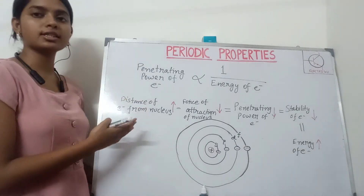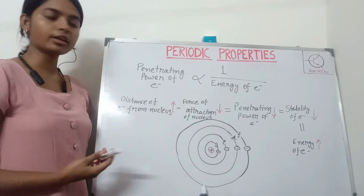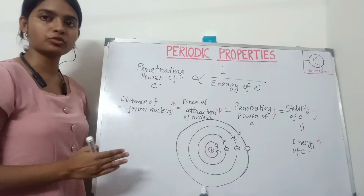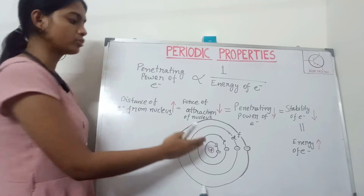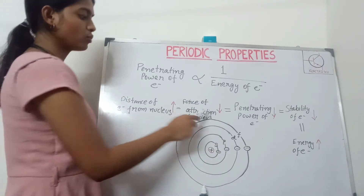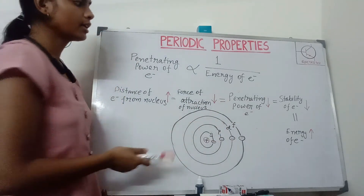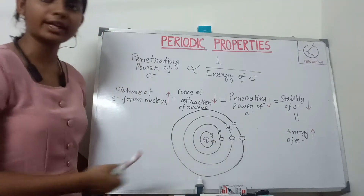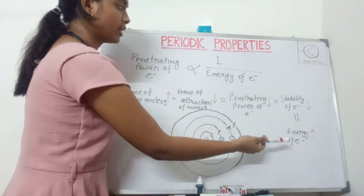The reason is: as the distance of the electrons from the nucleus increases in each orbital, the electron in S has the least distance from the nucleus compared to P, D, and F. So the force of attraction from the nucleus on electrons in each orbital decreases as distance increases. As the force of attraction decreases, the penetrating power decreases. And as penetrating power decreases, the energy of the electron increases.